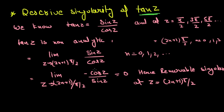Taking the derivative, sin z becomes cos z and cos z becomes minus sin z. We apply the limit to get a finite value, hence this is a removable singularity at z equal to (2n+1)π/2.